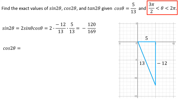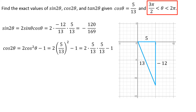For cosine of 2θ, all three identities give the same answer. I'll use 2 cosine squared θ minus 1, since I already know cosine θ = 5/13. That gives 2 × (25/169) − 1 = 50/169 − 169/169 = −119/169.